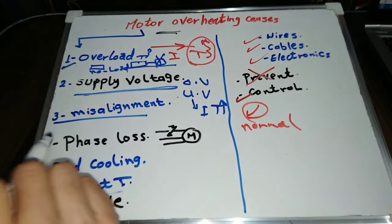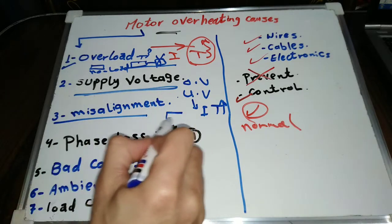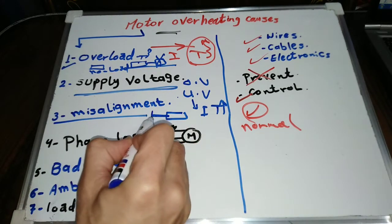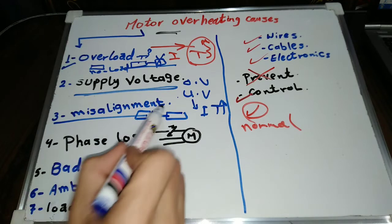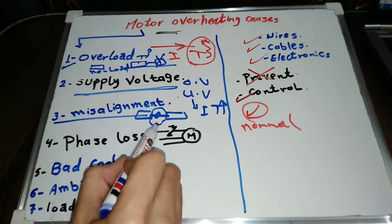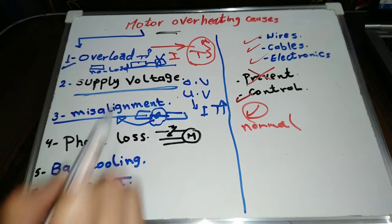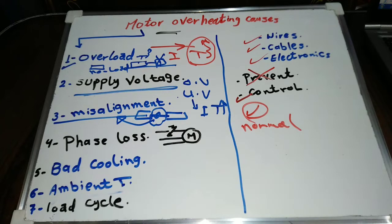Load misalignment. Mechanical loads and the electric motor are shaft-to-shaft connected through a coupling. It's the mechanical team's job to make sure the motor and load shafts are in good alignment. If not, the motor will face larger mechanical load and will overheat.